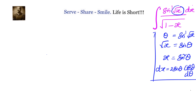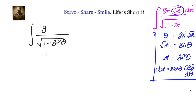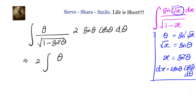Now let us transform the given integral in terms of theta. We write the integral of sin inverse root x, which equals theta, divided by square root of 1 minus x. Since x equals sin square theta, we write square root of 1 minus sin square theta, which becomes cos theta. And instead of dx, we substitute 2 sin theta cos theta d theta. Simplifying, we bring 2 outside and theta over cos theta multiplied by sin theta cos theta d theta — cos theta cancels with cos theta.